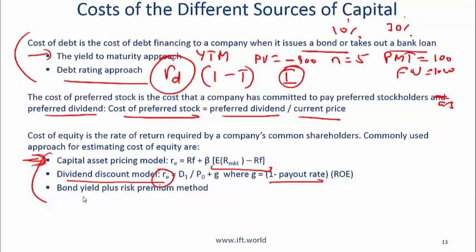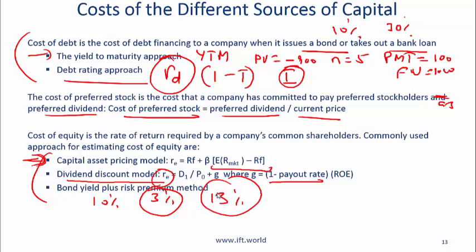The third method is the bond yield plus risk premium approach. If a company has issued a bond with a YTM of 10% and you believe equity should carry a premium of 3% over the bond, then the cost of equity using this method is 13%.